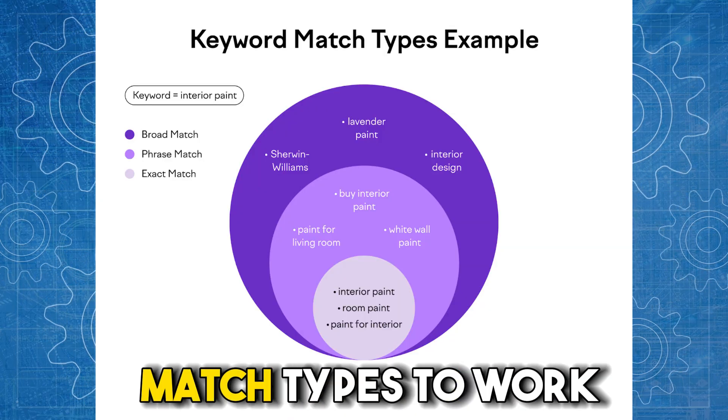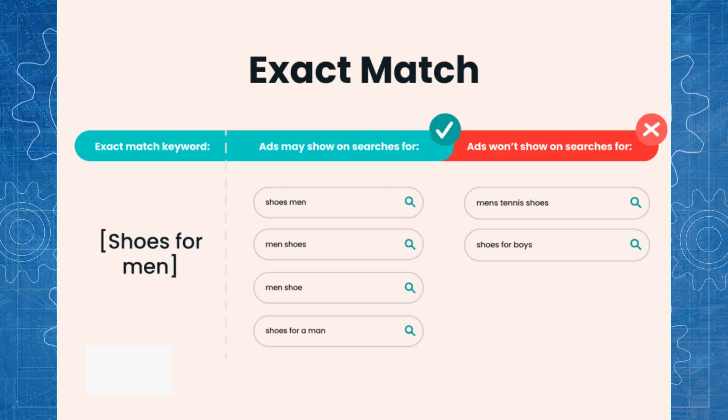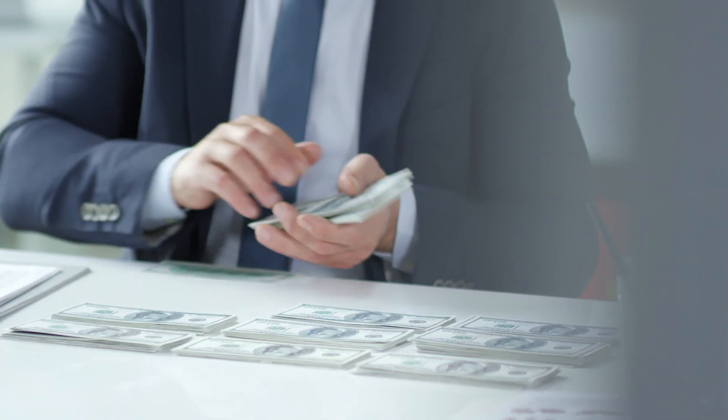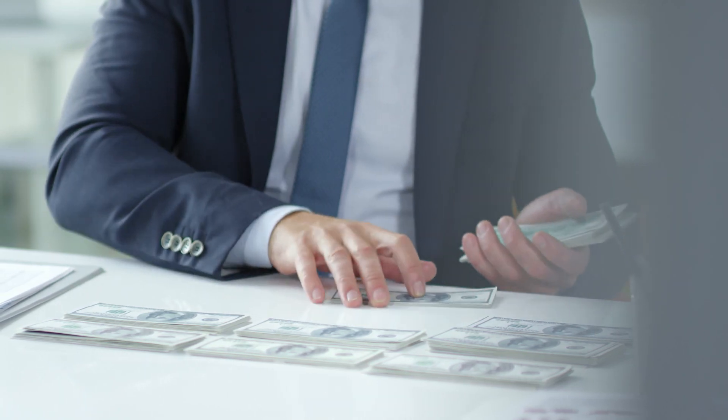Why does Google allow all these match types to work outside of what they're supposed to do? The answer is quite simple — it's because Google's algorithms are moving away from the keyword and moving towards the persona or the person performing the search, using auction-time signals to understand exactly how the person has behaved online to judge their sentiment, whether in market or not.